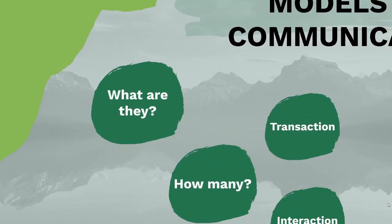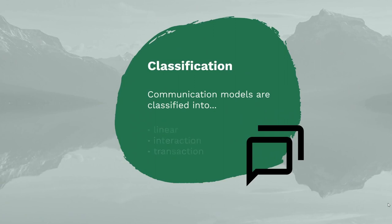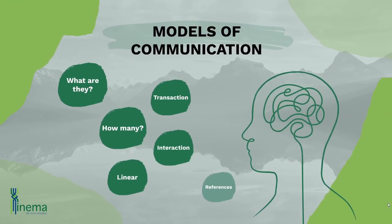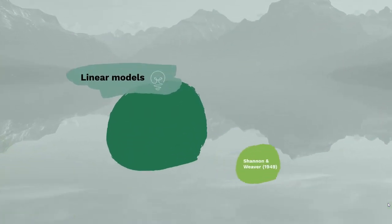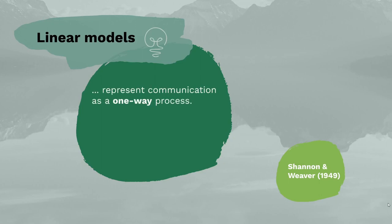While there are many communication models, they all fall into just three classes: linear, interaction, and transaction. Let's begin with the linear models, precisely where the history of communication models started. Linear models are models that represent communication as a one-way process.